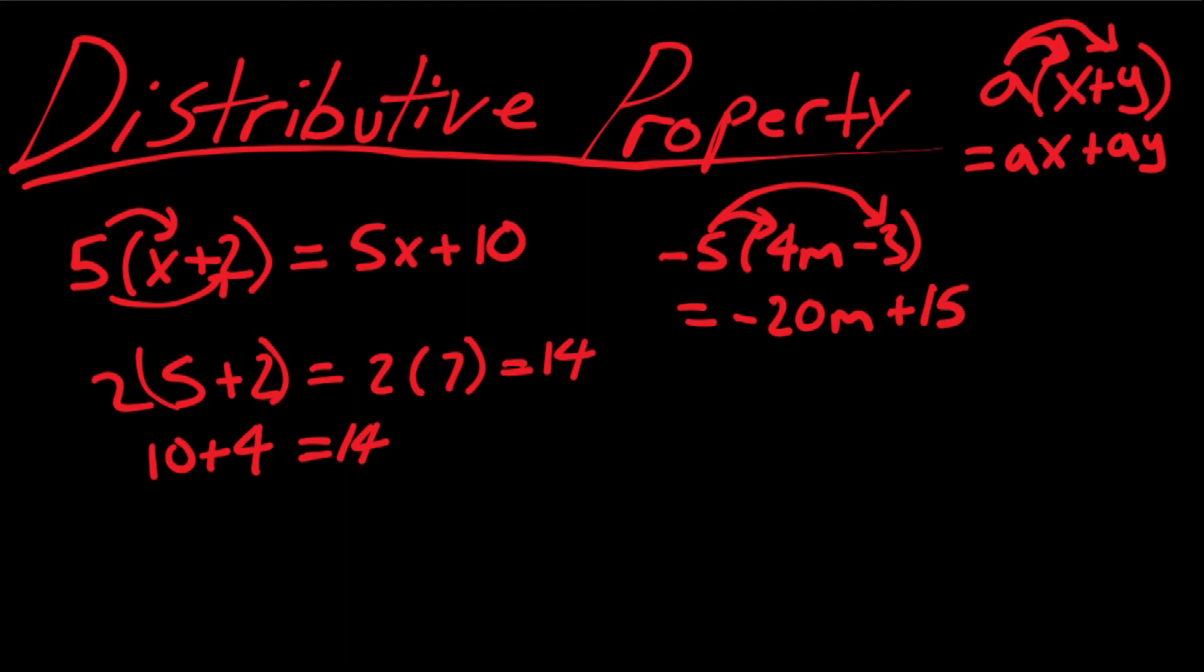And another example, just so you don't get confused. If you ever see it written in an opposite order, it doesn't always have to be in front of it. You can have these 2 brackets here, with a value being multiplied by it afterwards. And, of course, it's still worth the same.